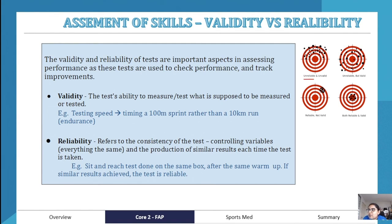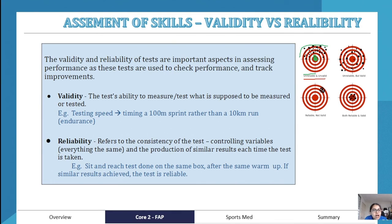Reliability refers to the consistency of a test — controlling variables so results remain the same each time. For example, a sit-and-reach test performed on the same box each time should produce similar results, telling us the test is reliable. A visual diagram illustrates four scenarios: unreliable and invalid — results scattered and off-target; and unreliable but valid — scattered but near the center.